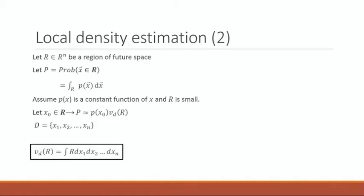Let R be a region of feature space in R^n, and let P equal the probability of X in region R. That gives us P equal to the density at X. Assuming P of X is a constant function of X and R is small, the probability is approximated to the density at X times the volume. The equation for the volume of the region is shown here, with D being our data set.